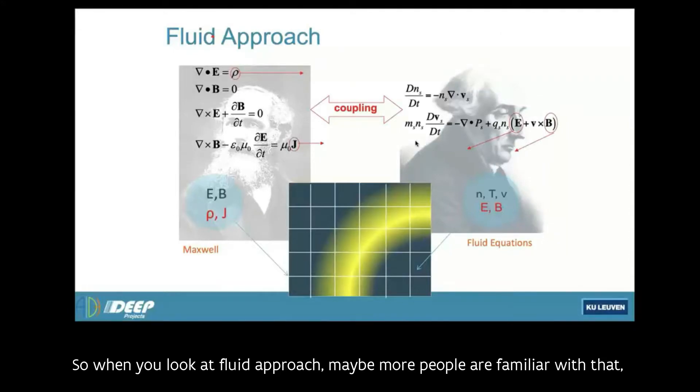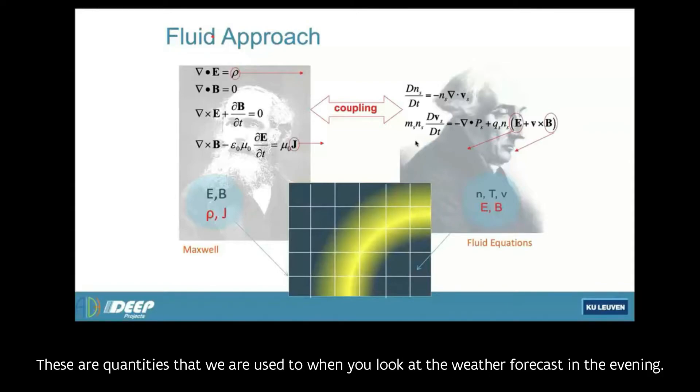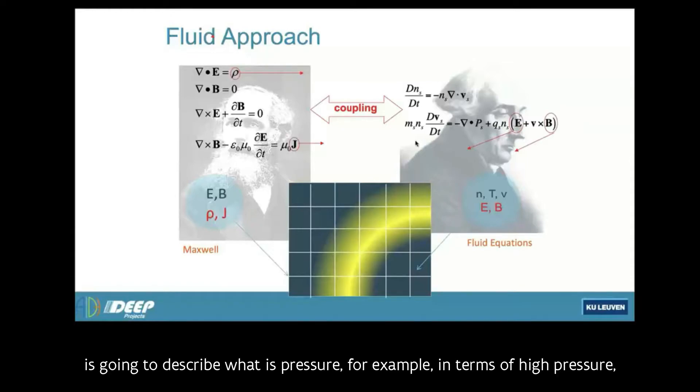So when you do a fluid approach, maybe more people are familiar with that, you are dealing with fluid equations. So you have a continuum that is described by some local quantities, like the density, the temperature, the velocity. These are quantities that we are used to. When you look at the weather forecast in the evening, Frank, or whoever replaces Frank, is going to describe what is the pressure, for example. It tells you high pressure, low pressure, coming. Those are fluid models. Same applies to space weather.